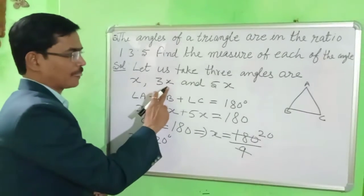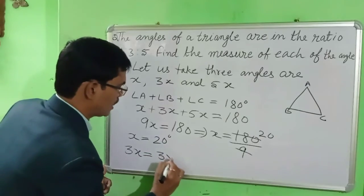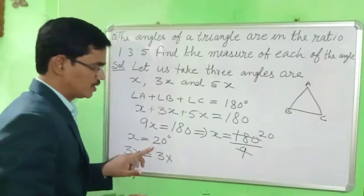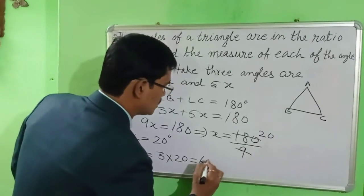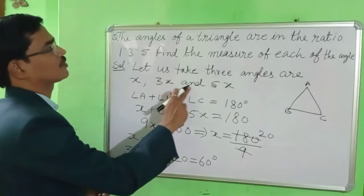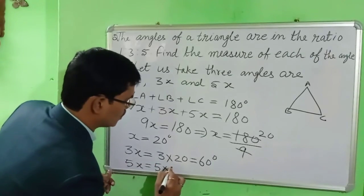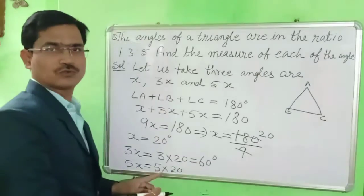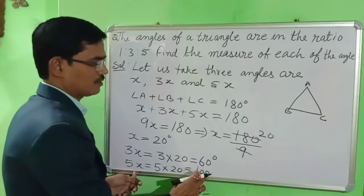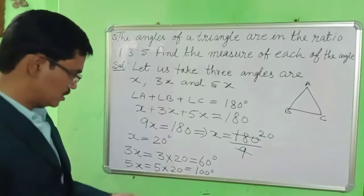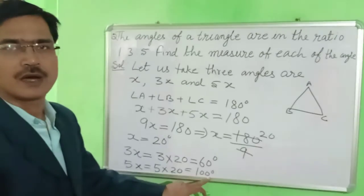The second angle is 3X, so 3 times 20 equals 60 degrees. The third angle is 5X, so 5 times 20 equals 100 degrees. So in this way we find all three angles: the first angle is 20 degrees, the second angle is 60 degrees, and the third angle is 100 degrees.